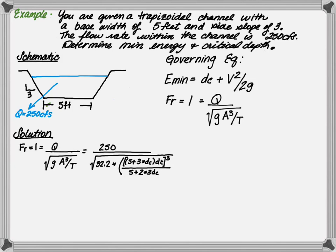First, we're going to solve for the critical depth by setting the Froude number equal to 1 and plugging in the necessary equations. So we have 250 CFS divided by the square root of gravity, 32.2, times the area cubed. And in this case, the area has the base width of 5, the side slopes of 3, and the unknown quantity of the critical depth.